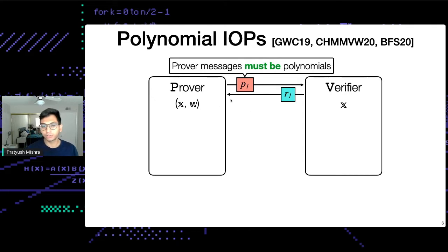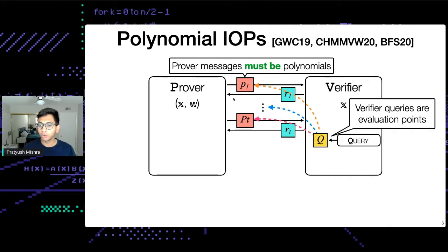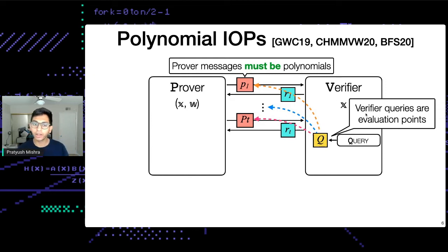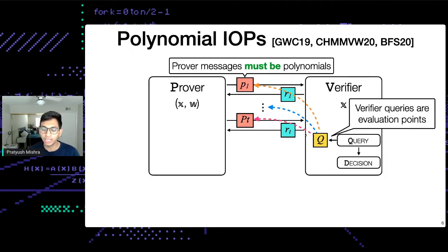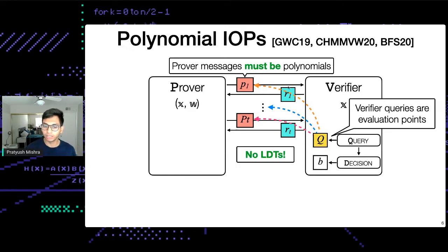The query set is still, as before, some set of evaluation points. The verifier queries P1 at a point Z1, Pt at a point Zt, and so on. Based on the results of these evaluations, it makes some decision. This is basically the same as the IOP model, except we don't have any LDTs — we just assume that the prover messages are polynomials.